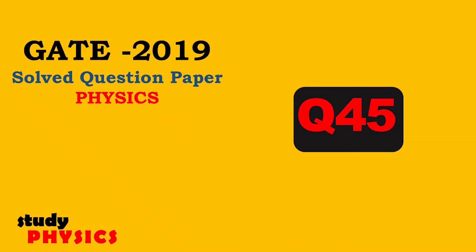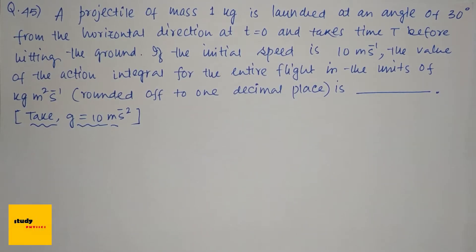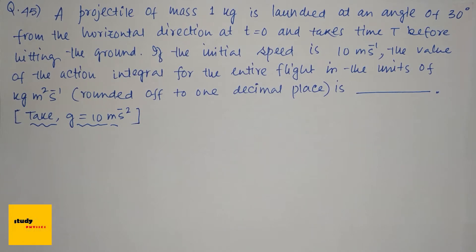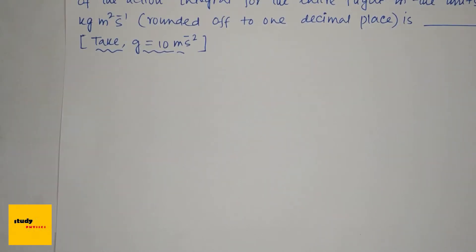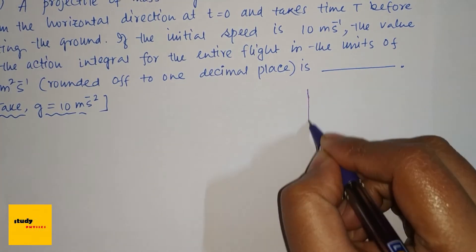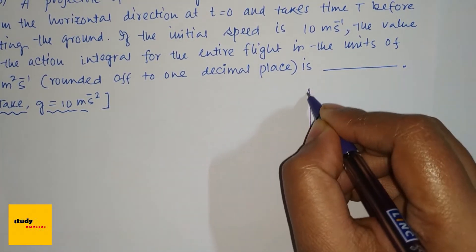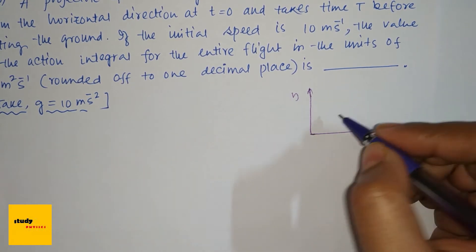Welcome to Study Physics. Question number 45: a projectile of mass 1 kg is launched at an angle of 30 degrees from the horizontal at t = 0, and takes time T before hitting the ground. If the initial speed is 10 meters per second, find the value of the action integral for the entire flight in units of kg·m²/s. Take g = 10 m/s². We set up x and y directions.